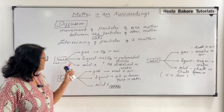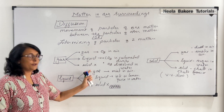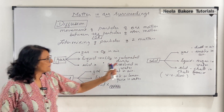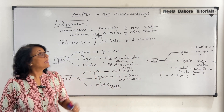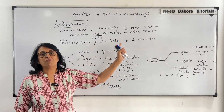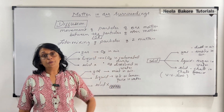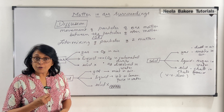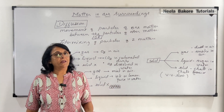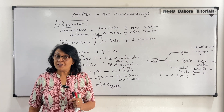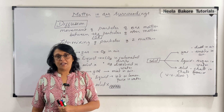So when we say diffusion, one matter diffuses into the other matter. Our definition is intermixing of particles of two different matters. The rate of diffusion — how fast these particles will move — will depend on many things, termed as factors affecting the rate of diffusion. We will take that up next.